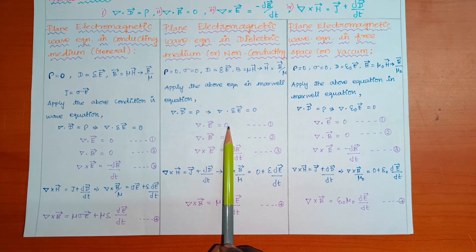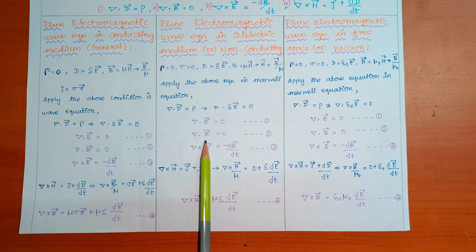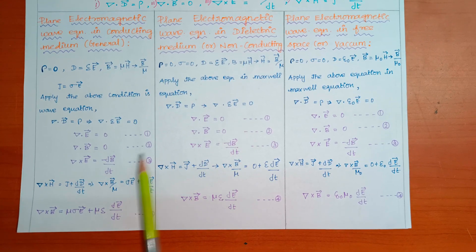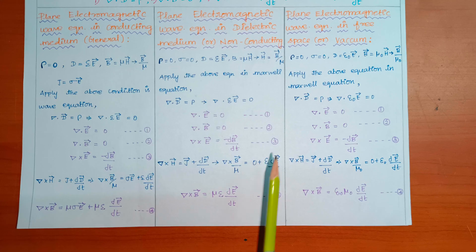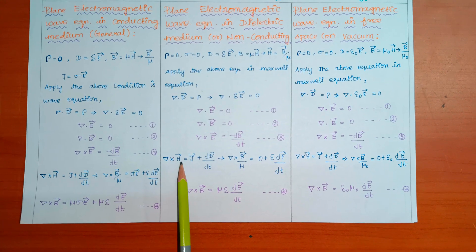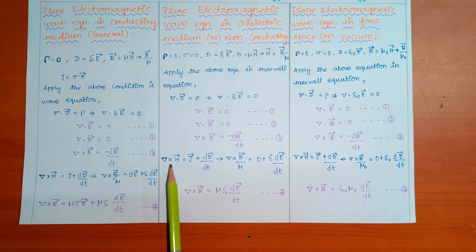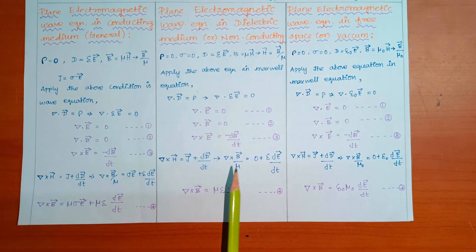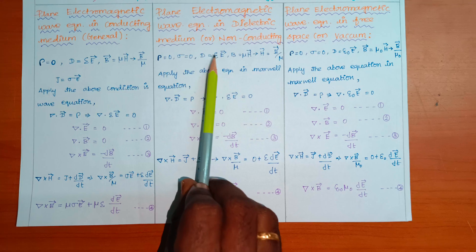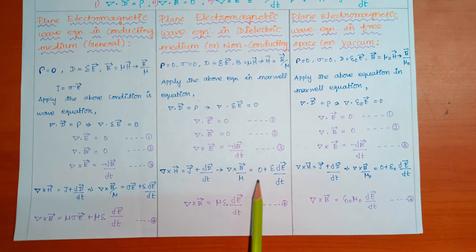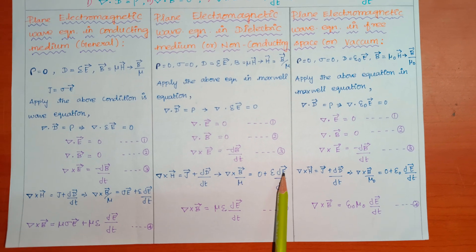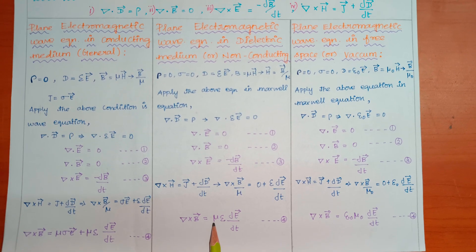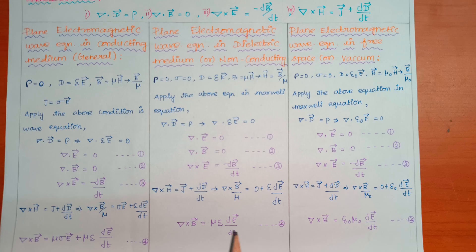Applying these conditions: del dot E equal to zero, del dot B equal to zero. From equation 3: del cross E equal to minus dou B by dou t. From equation 4: del cross H equal to J plus dou D by dou t. Substituting H equal to B vector by mu, and since J equals zero in a non-conducting medium, we get del cross B vector equal to mu epsilon dou E by dou t.